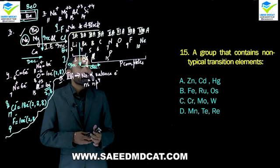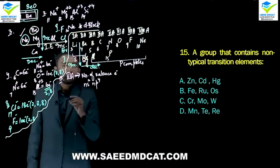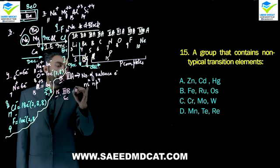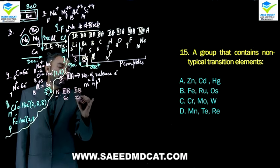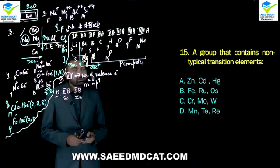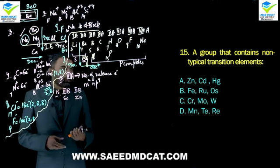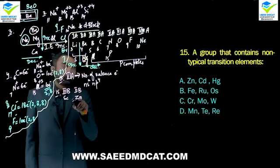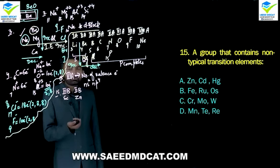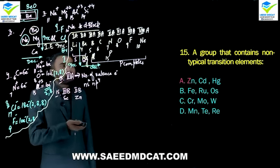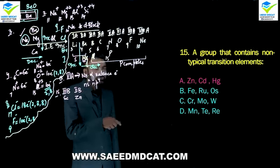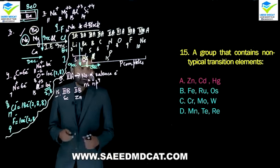Question 15: Which group contains non-typical transition elements? Non-typical transition elements are scandium (3B) and zinc (2B). Among the options, zinc is a non-typical transition element, and scandium's option isn't present. So we select the option containing zinc, because zinc is a non-typical transition element, and the others in that group would also be non-typical transition elements. Alpha option is correct.